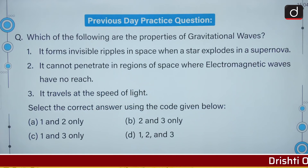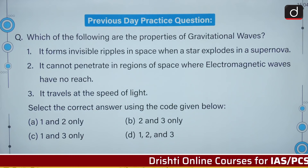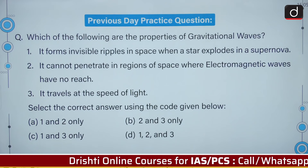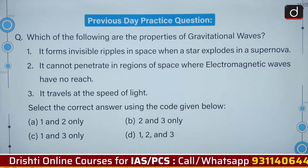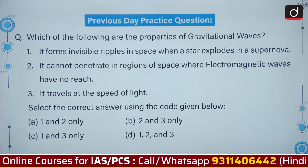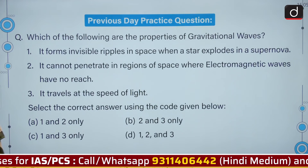Which of the following are the properties of gravitational waves? Statement one: it forms invisible ripples in space when a star explodes in a supernova. Statement two: it cannot penetrate into regions of space where electromagnetic waves have no reach. Statement three: it travels at the speed of light. We have to choose the correct statement.